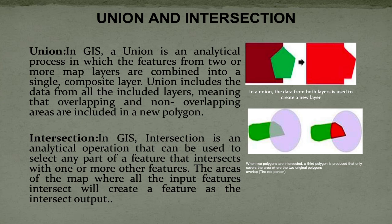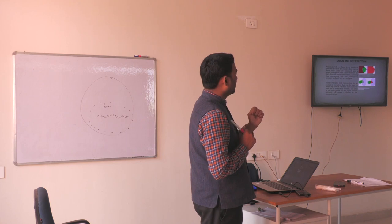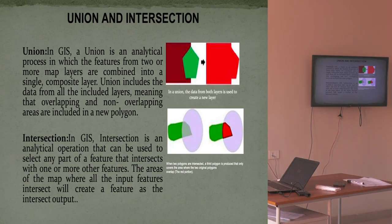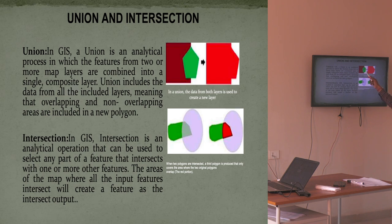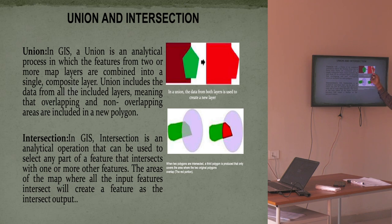Another important tool is union and intersection. Union is an analytical process in which features from two or more map layers are combined into a single composite layer. For example, you may have fallowland and agricultural land as different thematic layers in adjacent areas, and you want to show them as a single map — you use union. The final output shows two polygons combined together, with all attributes merged together in the new map.